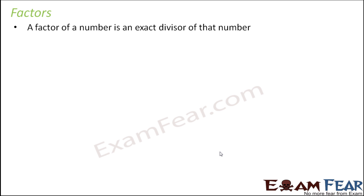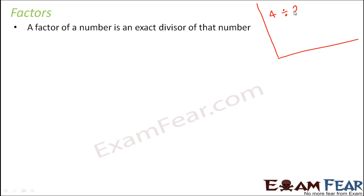So what are factors? A factor of a number is an exact divisor of that number. Now, to understand this, let us look at division. Let's say we are dividing 4 by 2. That means 4 is the number being divided, so 4 is the dividend and 2 is the divisor.